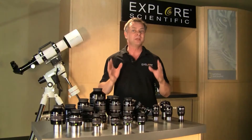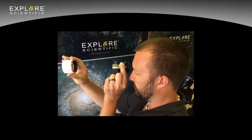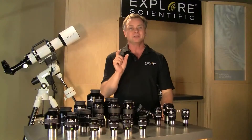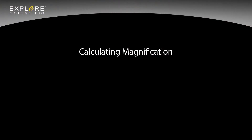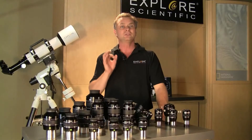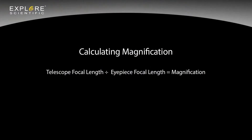So how does magnification work? The focused image from the telescope lens is being magnified by the eyepiece. In this case, the telescope focal length is about 160 millimeters and the eyepiece is only 20 millimeters, producing 8 times magnification. You take the telescope focal length in millimeters divided by the eyepiece focal length in millimeters, and that will equal magnification. Or you can take the telescope aperture in millimeters and divide it by the exit pupil in millimeters, and that will also equal the magnification.